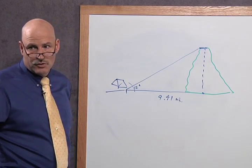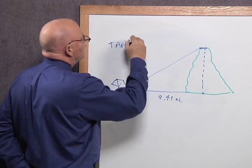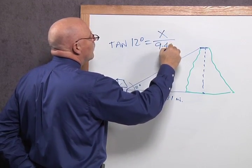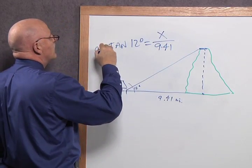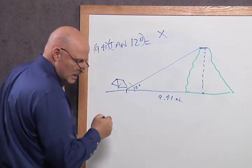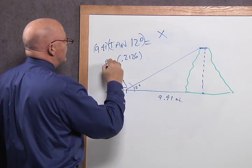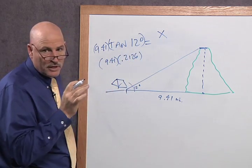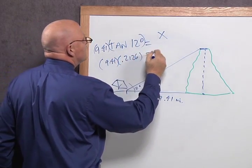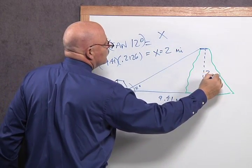So which ratio are we going to choose? Tangent again. And the tangent of 12 degrees is x, or mountain, over 9.41, so we multiply 9.41 times this. So the tangent of 12 degrees, we punch in 12 degrees in our calculator, we get 0.2126 times 9.41. It's like one of those cooking shows where they have everything cooked, because I already got the answers in the book. So you multiply this times this, and what you get is x equals 2 miles. So this mountain is 2 miles high.